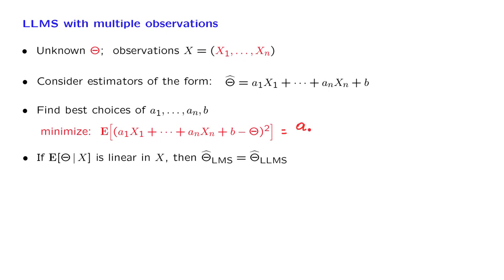For example, it's going to have a term of the form a1 squared times the expected value of x1 squared. It's going to have a term such as twice a1 a2 times the expected value of x1 x2.